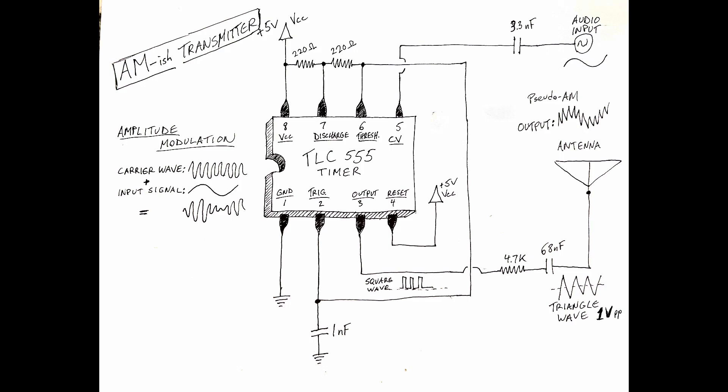The output, which is coming from pin 3, is basically going through a low-pass filter through this 4.7 kilo-ohm resistor and a small capacitor and going out to the antenna.